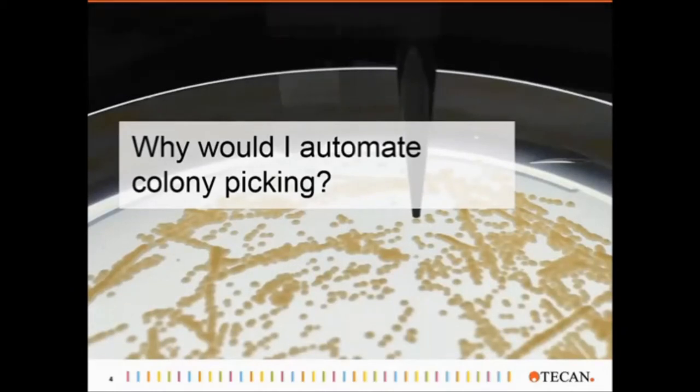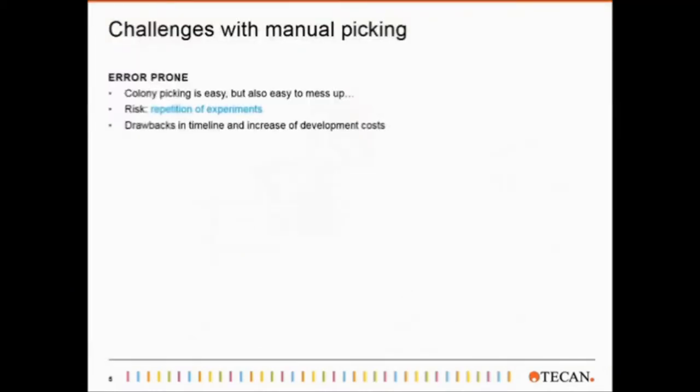So, why would I automate colony picking? First, manual colony picking is error prone. When I was still picking colonies manually, I actually really liked it, up to a certain point. It is quite easy to do, but also easy to mess up, especially if it's not only 20 plates, but 50, hundreds, and more.